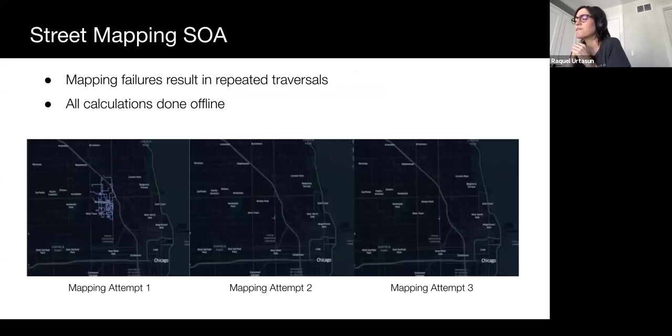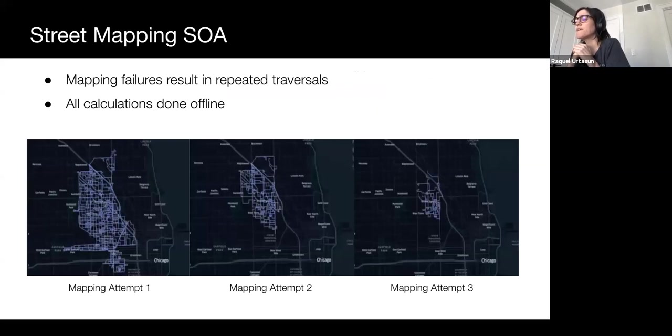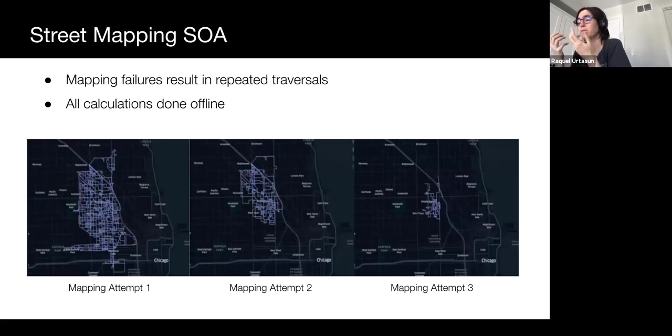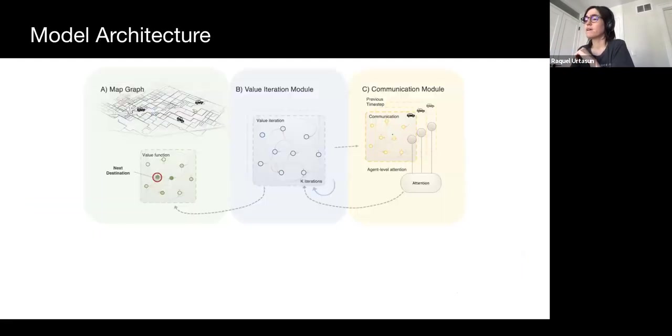However, in practice, mapping tasks tend to be conducted in a somewhat inefficient manner. What tends to happen is an initial trajectory is calculated using an iterative solver offline, and the fleet of vehicles is sent out to perform the mapping task, as seen in mapping attempt 1. After they return, we determine which streets had mapping failures, and we send out the vehicles again, as seen in mapping attempts 2 and 3. This process is repeated until every street has been successfully mapped, which as you can see isn't necessarily the most efficient practice due to the lack of real-time responsiveness, and the fact that you have to go back to base, and then observe what you have done, and then go back into the field.